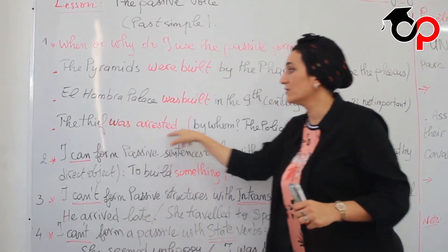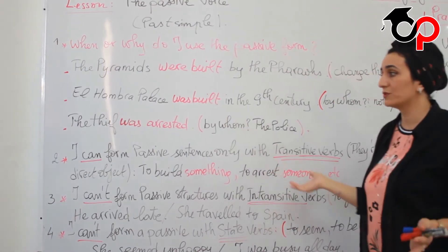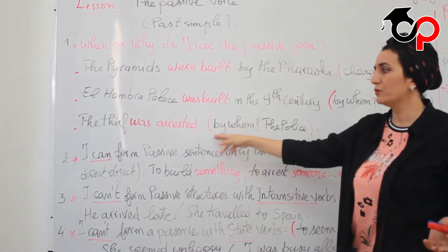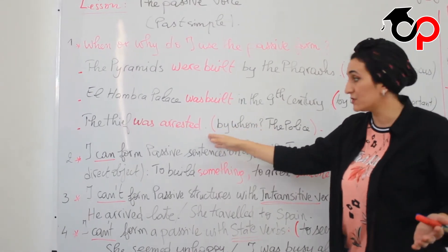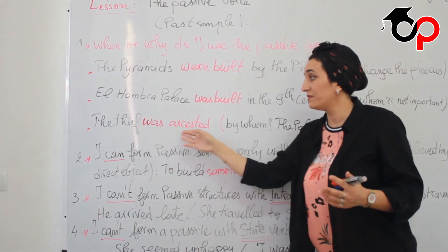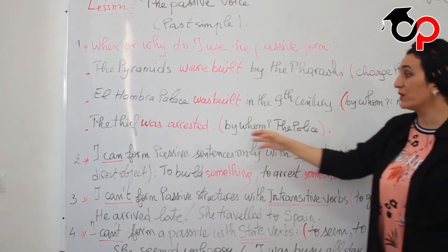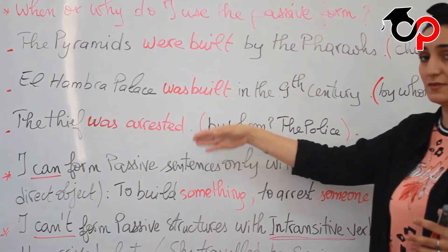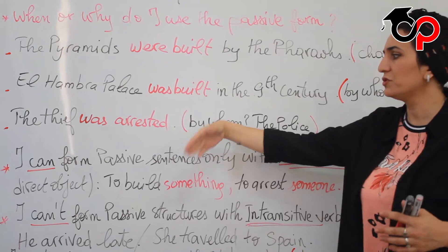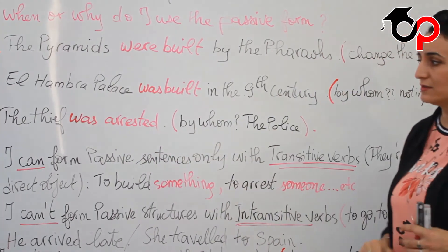Third example: 'The thief was arrested.' By whom? Who is the agent here? It's obvious — everybody knows that the thief was arrested by the police. So when we already know who the agent is, you can just not mention it and use the passive voice this way.